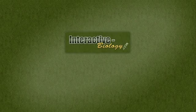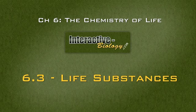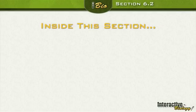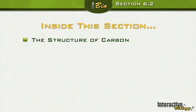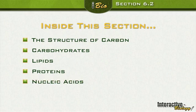Now we're going into section 6.3, where we're going to talk about life substances — some of the things you need besides water in order to live. Inside this section we are going to talk about the structure of carbon, and we're going to look at carbohydrates, lipids, proteins, and lastly nucleic acids.